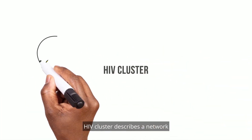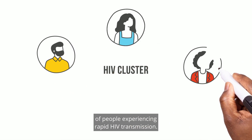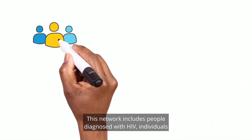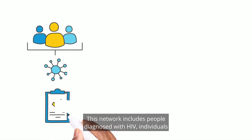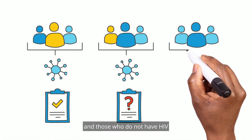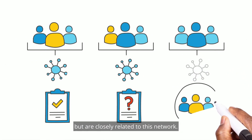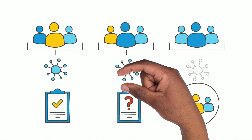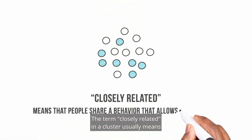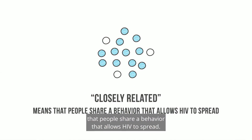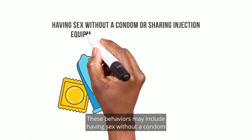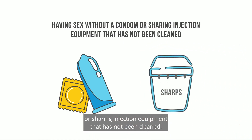The term HIV cluster describes a network of people experiencing rapid HIV transmission. This network includes people diagnosed with HIV, individuals who have HIV but have not yet been diagnosed, and those who do not have HIV but are closely related to this network. The term closely related in a cluster usually means that people share a behavior that allows HIV to spread, such as having sex without a condom or sharing injection equipment that has not been cleaned.